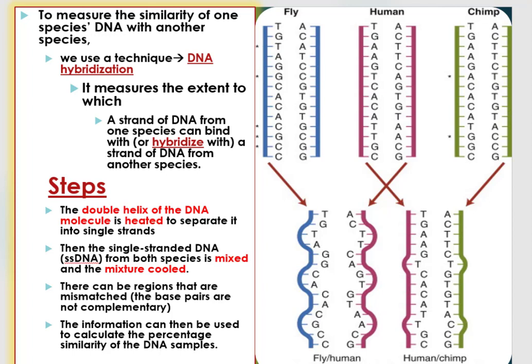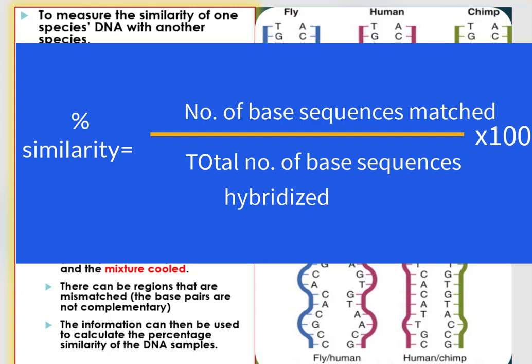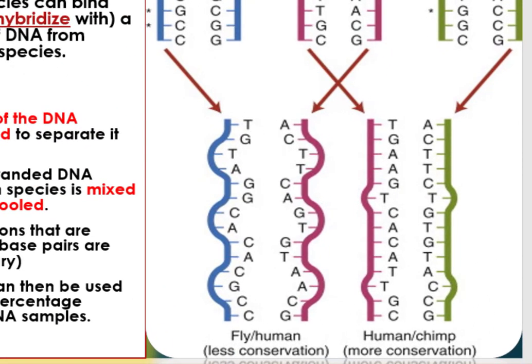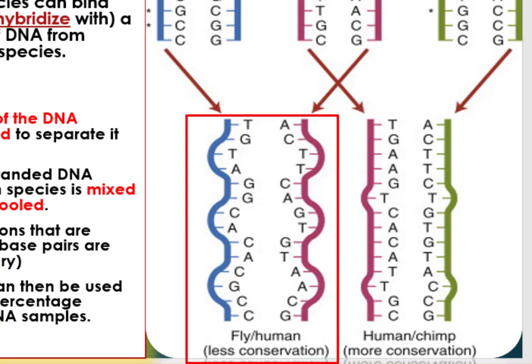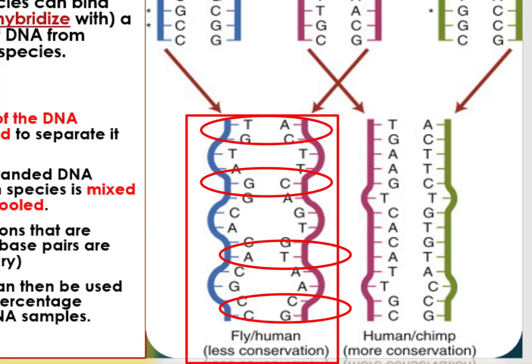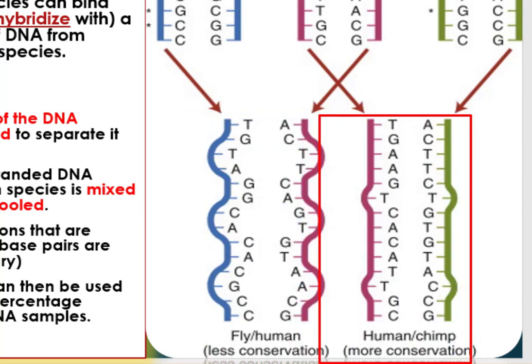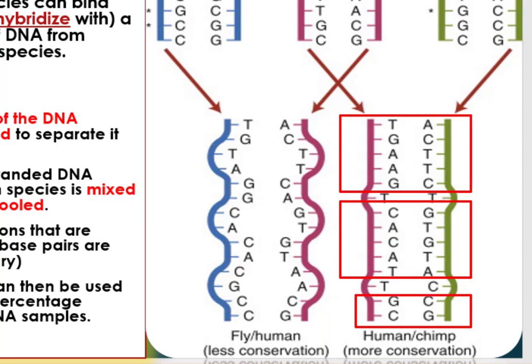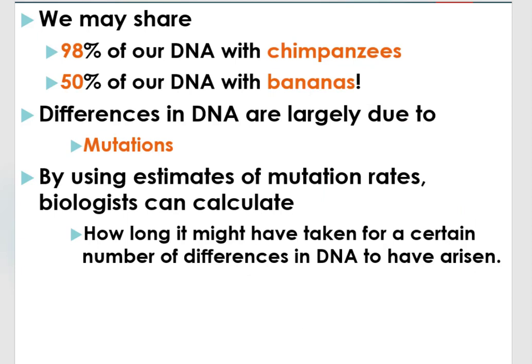To determine the percentage similarity, we use the formula: Percentage similarity = (number of matched base sequences / total number of base sequences) × 100. As seen from the diagram, when a strand of human DNA hybridizes with fly DNA, it is less conservative — fewer bases match. But when human DNA hybridizes with chimpanzee DNA, it is more conservative — most base sequences match with few mismatches. We share 98% of our DNA with chimpanzees and 50% of our DNA with bananas.